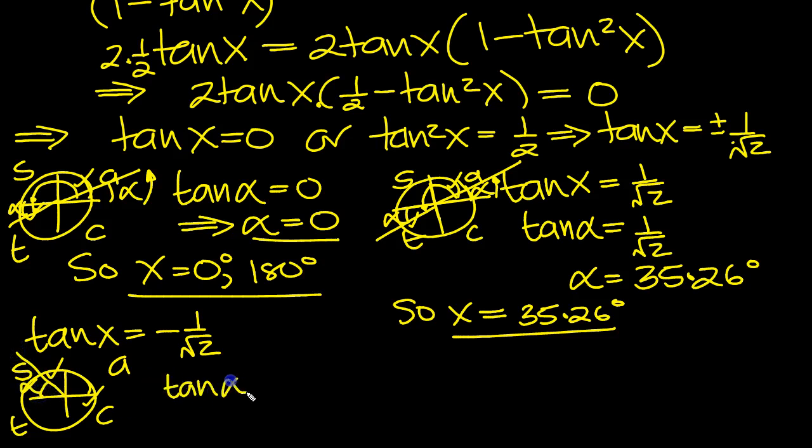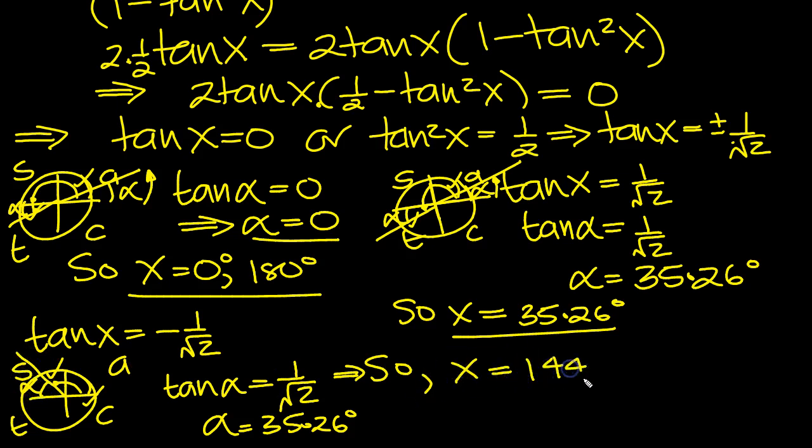So we write tan alpha then, associated acute angle here. Drop the negative if there is one to drop. So we get 1 over root 2 again, so we know that alpha is 35.26. So that tells us then, the x value is round to here, which is round 180 back 35.26, which is 144.74 degrees.